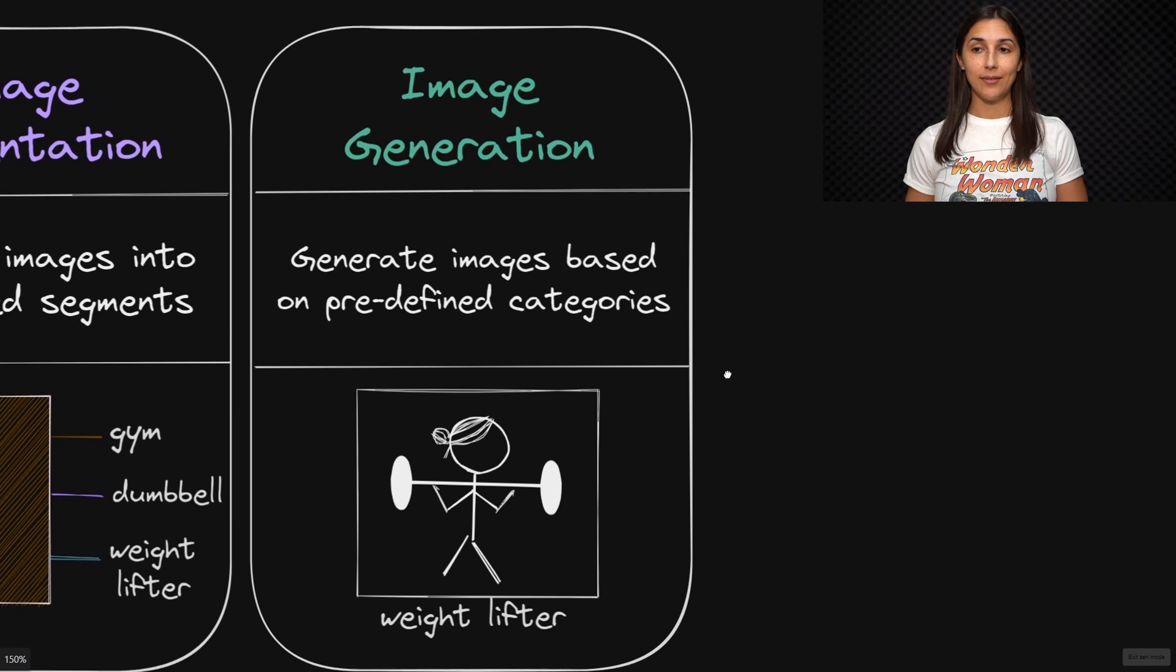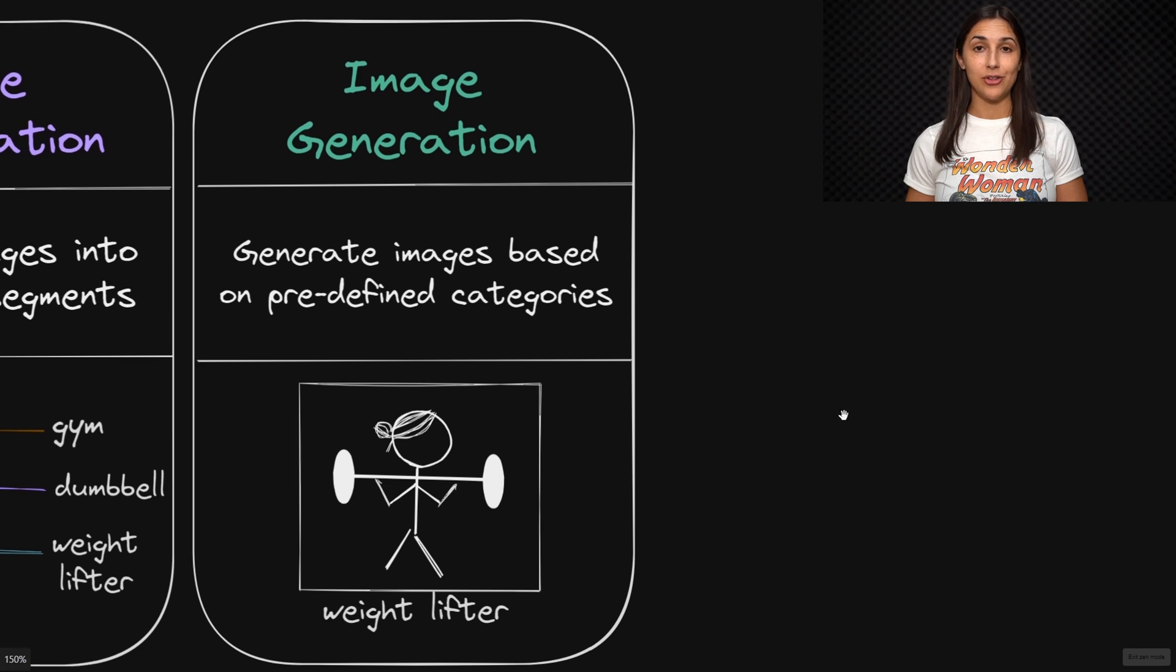And finally, we have the task of image generation. This is where we use an artificial neural network to generate images based on some predefined categories.